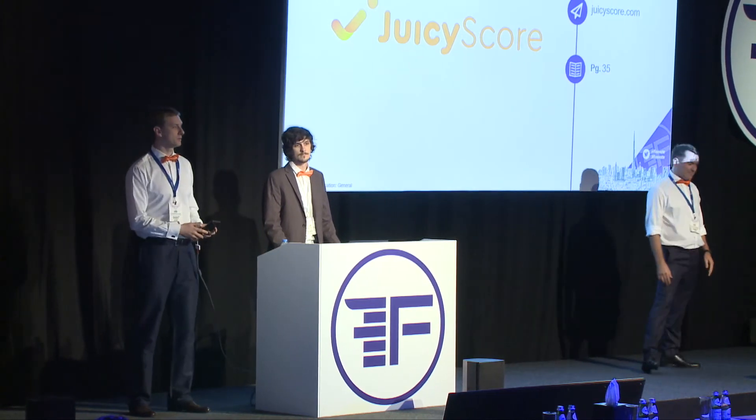Let us introduce our Juicy Score risk management platform, which consists of a number of elements such as SDKs for web and mobile, our API with a data vector, and BI functionality. Today we will show how all these components work together in a real online application process from both lenders' and borrowers' side.